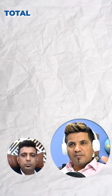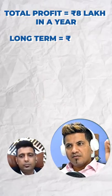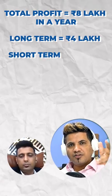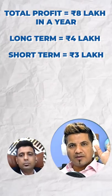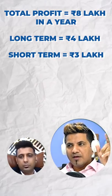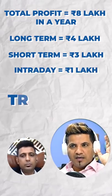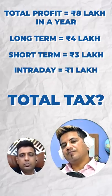A trader and investor has gained 8,000,000 profit in the year: 4,000,000 earned long term, 3,000,000 earned short term capital gain, and 1,000,000 earned as interest in the year. How much tax will he pay?